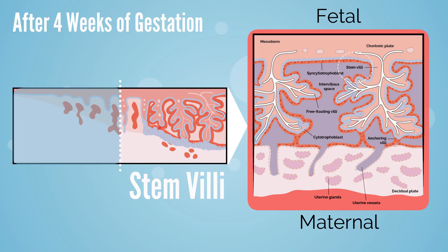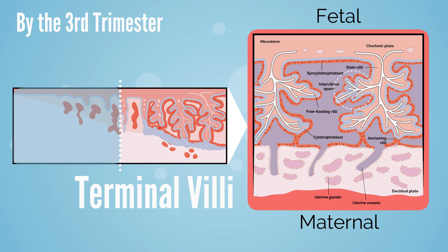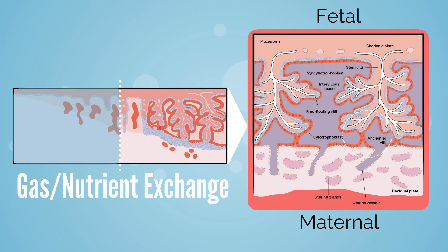The stem or anchoring villi are formed as extravillous cytotrophoblastic cells attach to maternal tissue. Branched or terminal villi grow from the sides of the stem villi. In the third trimester, the terminal villi emerge from the proliferation of the trophoblastic cells, induced by capillary coiling during the growth of fetal capillaries within the mature villi. At the base of the villi, the placental arteries and veins pass through the chorionic plate.